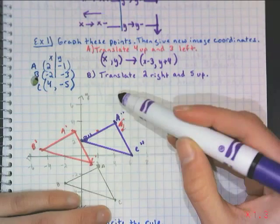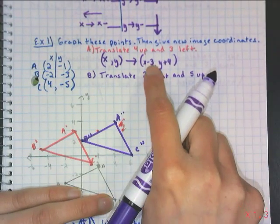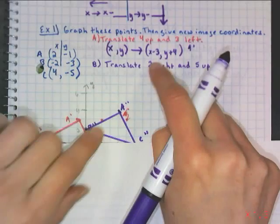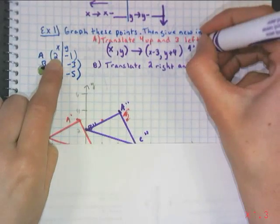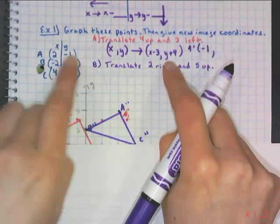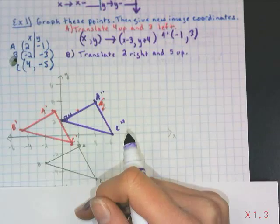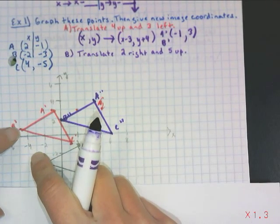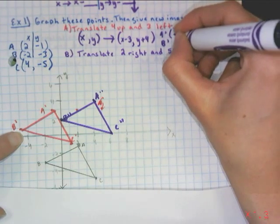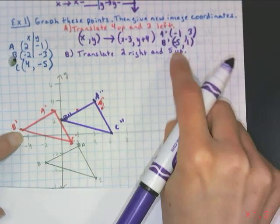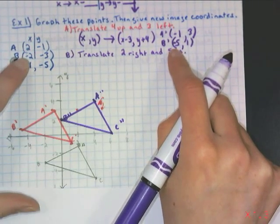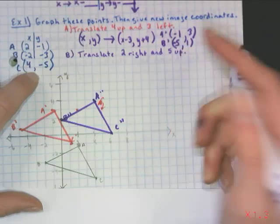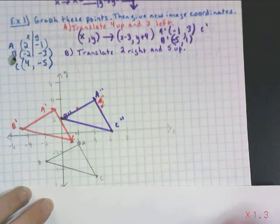For A prime: X − 3 gives 2 − 3 = −1, and Y + 4 gives −1 + 4 = positive 3. For B prime: B is (−2, −3). Negative 2 minus 3 is negative 5, and negative 3 plus 4 is positive 1 — so B prime is at (−5, 1), which matches the graph. The rule is just a shortcut to prevent us from graphing over and over again.